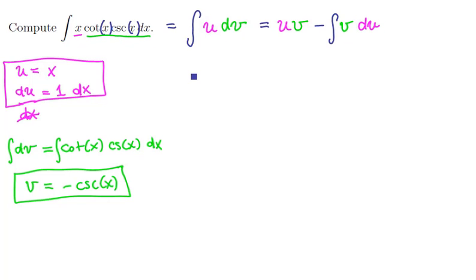So let's plug in what we've substituted. So for u, we'll replace with x. For v we'll replace with the negative cosecant of x.